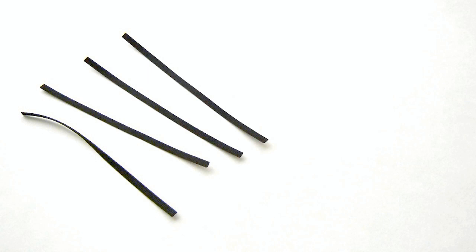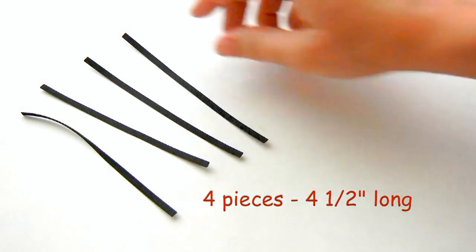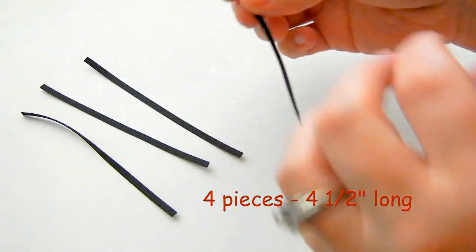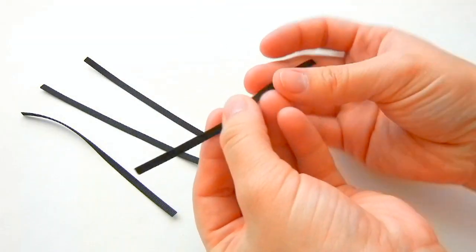Take your eighth of an inch ribbon and cut four pieces that are four and a half inches long. Make sure to seal the ends. These are going to be our spider legs.